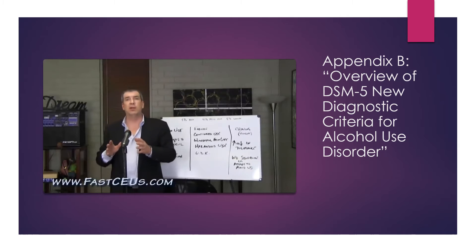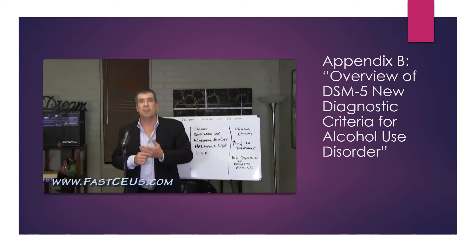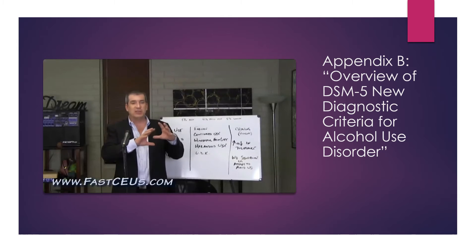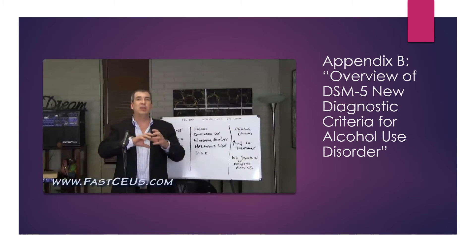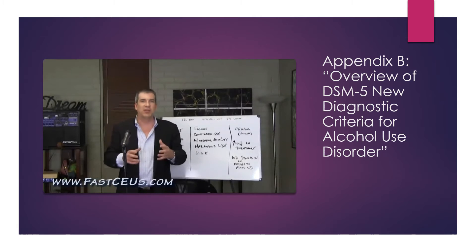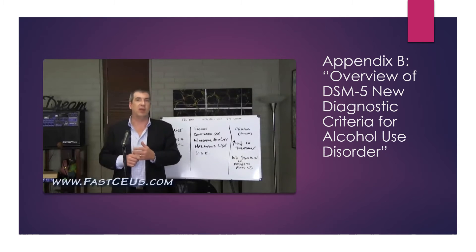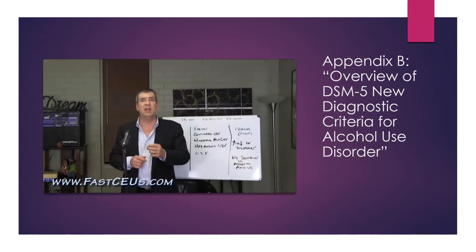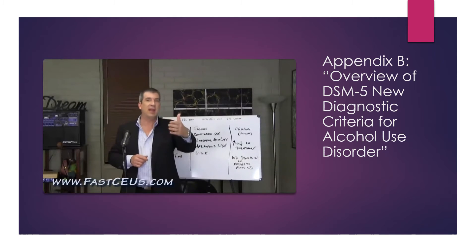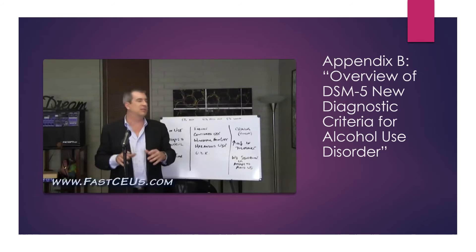Those familiar with the DSM-3 and DSM-4 know that the DSM-3-R described nine criteria for addiction diagnosis and the DSM-4 used seven — but with two and/or criteria, still equaling nine. The DSM-5 is more expansive, moving to a series of 11 criteria — though with criteria 10A or 10B and 11A or 11B, it effectively becomes 13 indicators. Under patterns of use, the first thing we look for is whether there is an increase in use — does the person use more today than before?